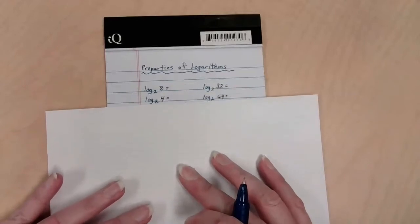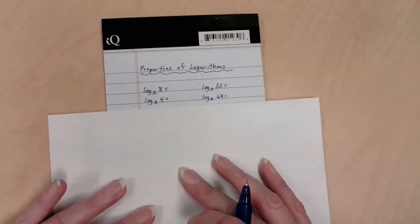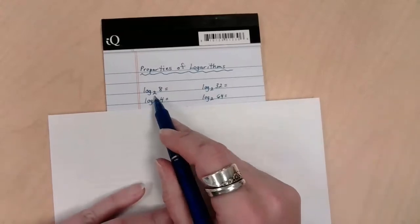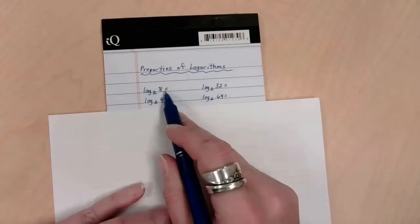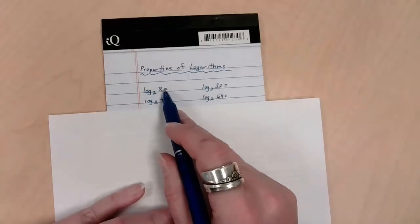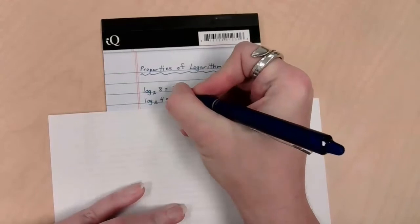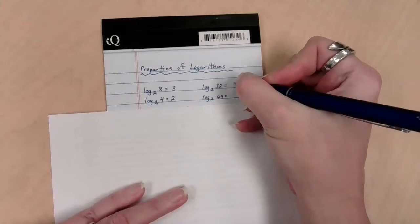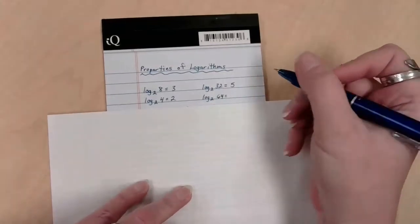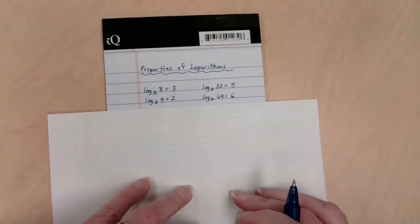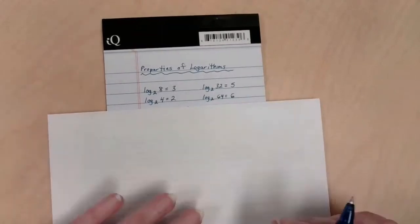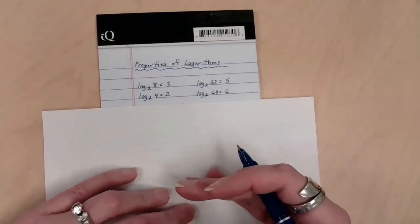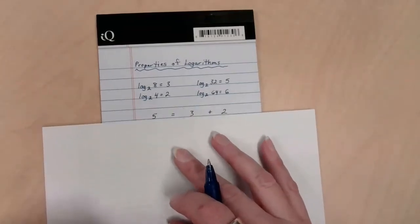I'm going to start with a knowledge bank for us to draw from. By way of review, if we think log base 2 of 8, this is the base, this is the answer, this is the power. In other words, this log is saying: two to what power would give me this answer? And that is three. Two cubed makes eight, two squared makes four, two to the fifth makes 32, and two to the sixth makes 64. That's just a data bank I'm going to draw from to show you a way to develop these properties so they make sense for your brain.